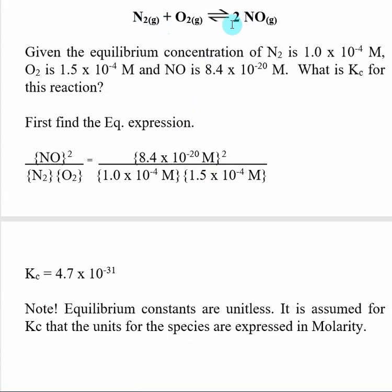Here, what I do is come up with the equilibrium expression for this reaction: products divided by reactants. This stoichiometric 2 shows up here, and then all I have to do is plug in all my numbers. Make sure you put the numbers in the right place. Do the calculation, and you get Kc is 4.7 × 10⁻³¹.